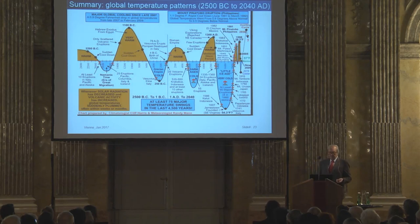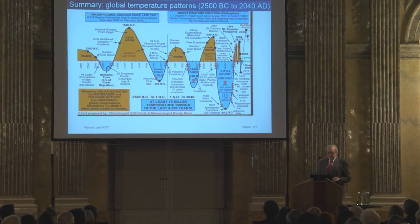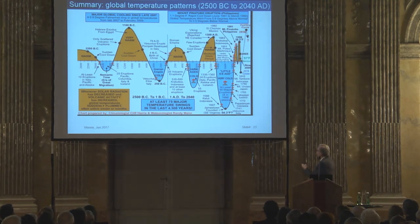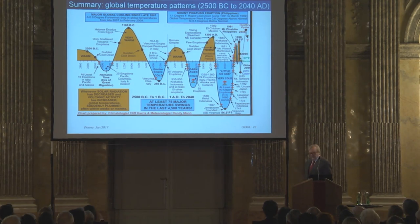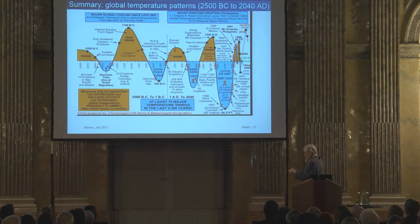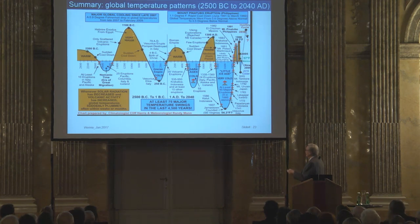Looking at the global temperature pattern over the last 2,000 years: here is 2,000 years before Christ, here is the present, and you can see the future projection. The Earth by itself has been going between periods of higher and lower temperatures. For instance, around 1,000 years before Christ, the temperature was much higher than today.